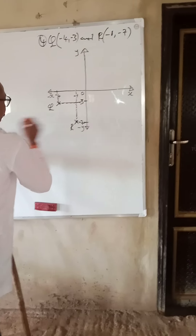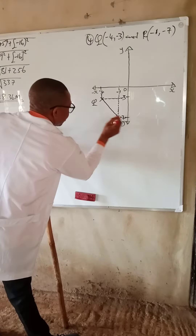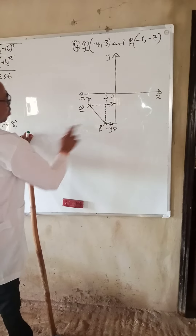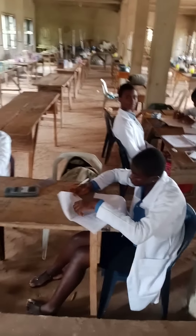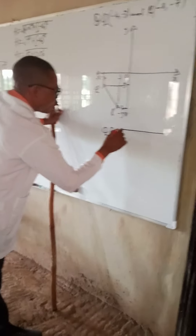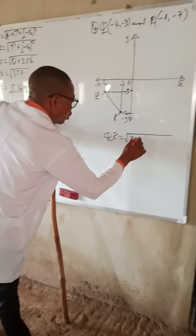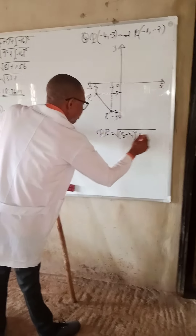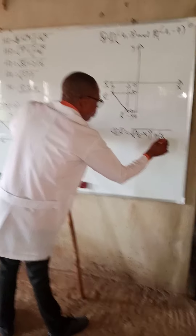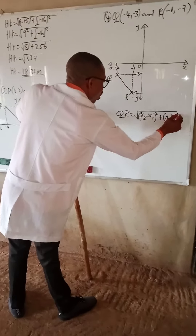We join the two points with a straight line. This line represents the distance between point Q and point R. We calculate that distance using the formula: QR equals the square root of (x2 minus x1) squared plus (y2 minus y1) squared.